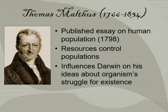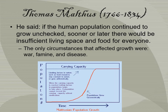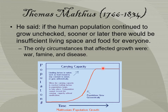Thomas Malthus published an essay on human population in 1798. He said that resources control populations, and this influenced Darwin's ideas about an organism's struggle for existence. He said that if the human population continued to grow unchecked, sooner or later there would be insufficient living space and food for everyone, with only war, famine, and disease affecting this growth. This is shown in a graph where population grows in an S-curve, hitting a carrying capacity line — if there is famine, that carrying capacity drops; war or disease causes a sudden decrease in population.